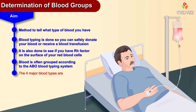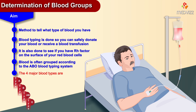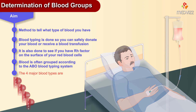The four major blood types according to this classification include type A, type B, type AB, and type O. The A and B are antigens which are commonly detected on the surface of the red blood cells.